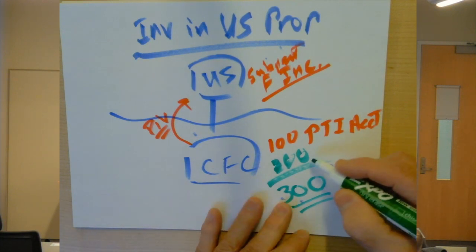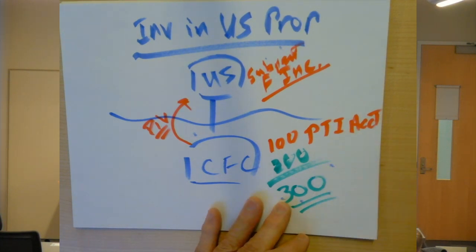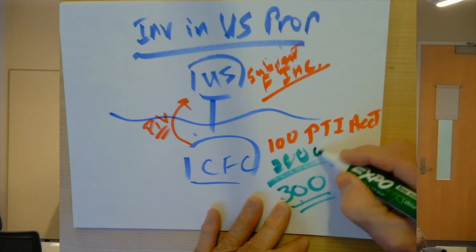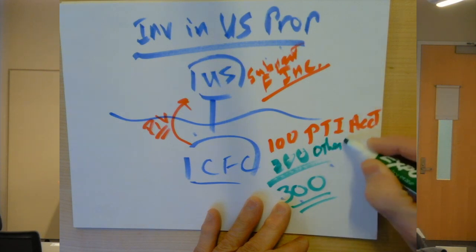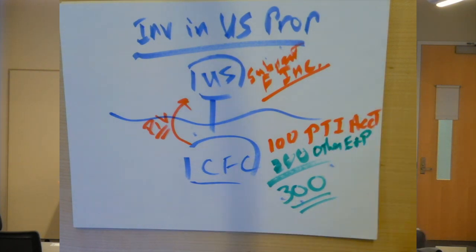So what is the 200? We could call the 200 other earnings and profits. Now, under deferral, this 200 would just remain untaxed by the U.S. until a dividend is paid out of it.